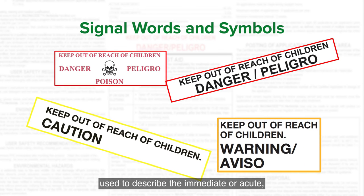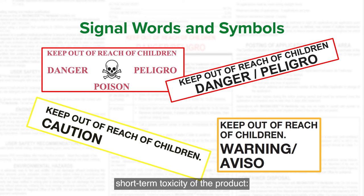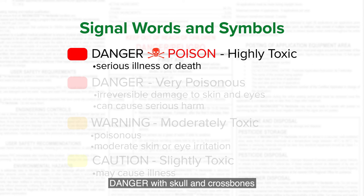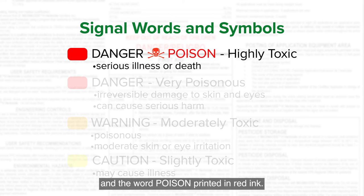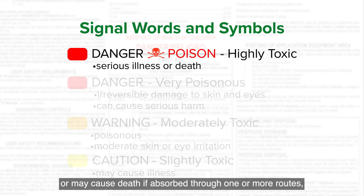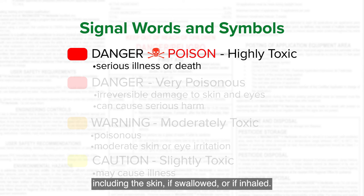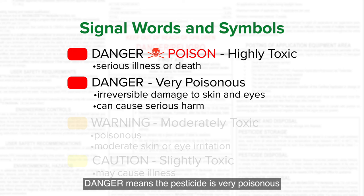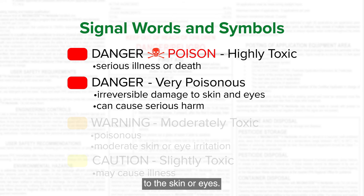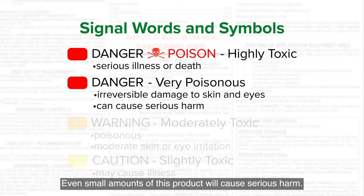There are four signal words used to describe the immediate or acute short-term toxicity of the product. DANGER with skull and crossbones and the word POISON printed in red ink means that the pesticide is highly toxic or extremely poisonous and will make you very sick or may cause death if absorbed through one or more routes, including the skin, if swallowed or if inhaled. DANGER also means the pesticide is very poisonous if it enters your body, or it is corrosive and causes irreversible damage to the skin or eyes. Even small amounts of this product will cause serious harm.